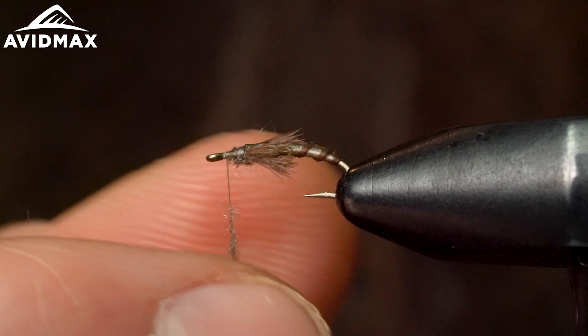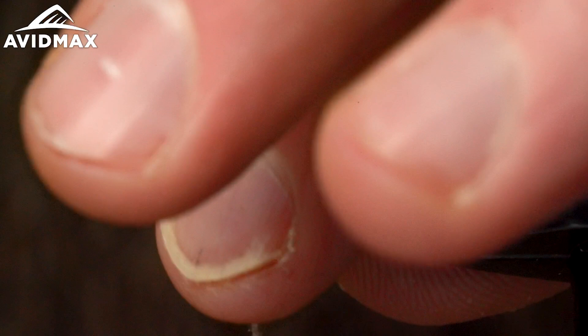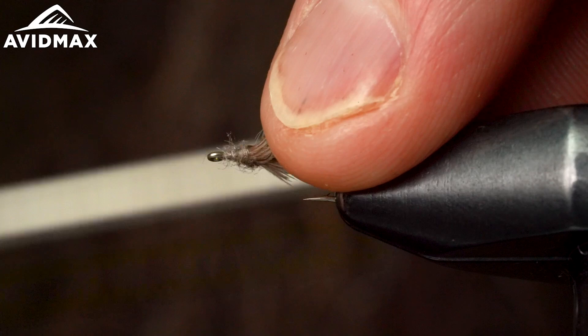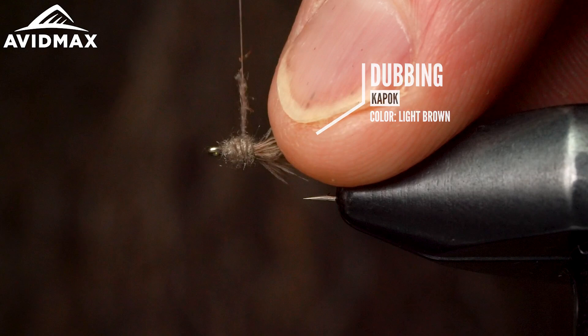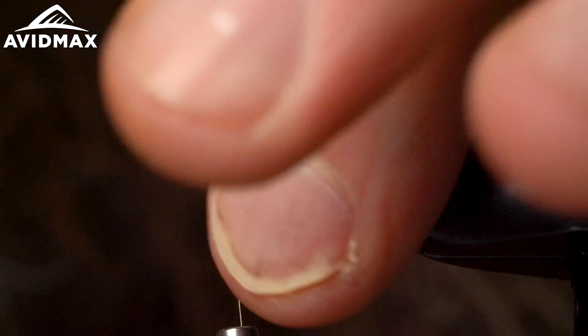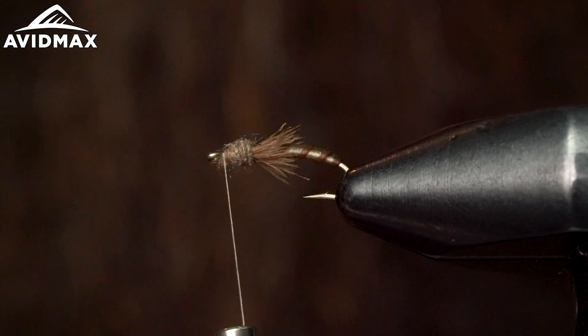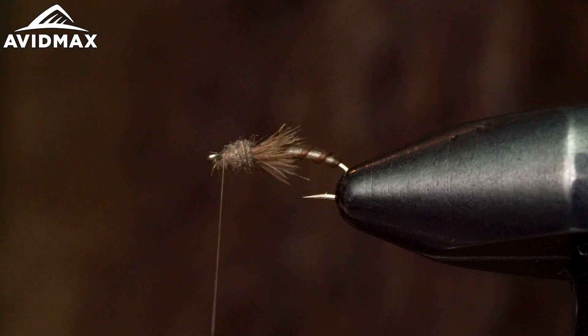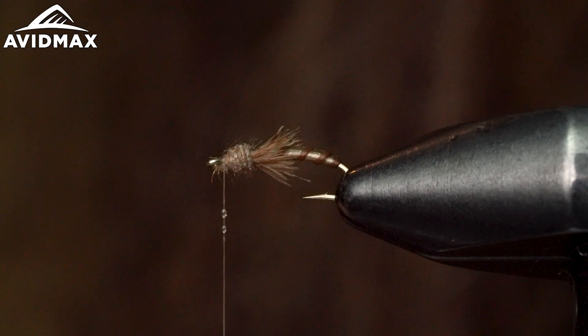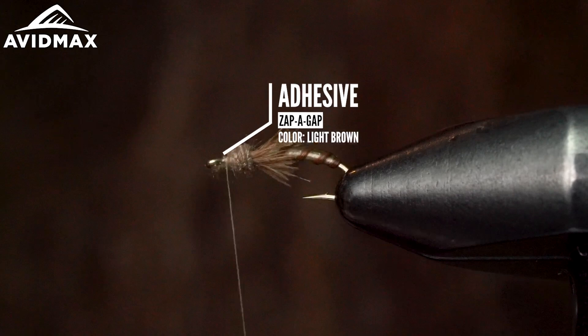Starting right up against the gills, and working up towards the eye of the fly. Looks pretty good there. Take another little hit of Zap-A-Gap on my thread, tiny little dab. And make a couple wraps. And then we can do a quick whip finish.